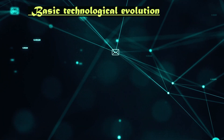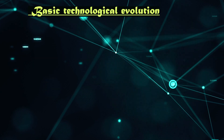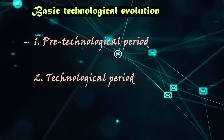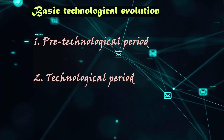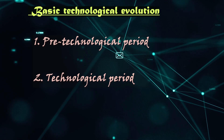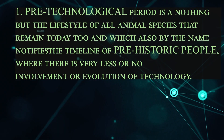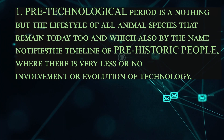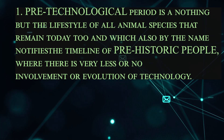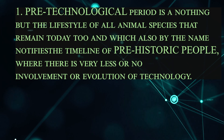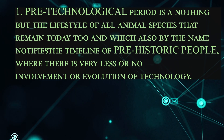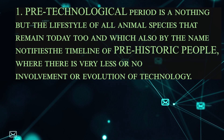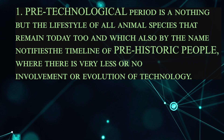Now let's talk about basic technological evolution. The timeline can be divided into two parts: the pre-technological period and the technological period. The pre-technological period refers to the lifestyle of all animal species that remain today, and also identifies the timeline of prehistoric people where there is very little or no involvement of technology.